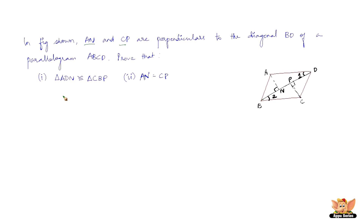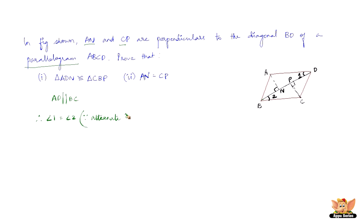Since ABCD is a parallelogram, we can say that AD is parallel to BC. Now AD is parallel to BC and transversal BD intersects them at B and D. Therefore, angle 1 equals angle 2 because they are alternate interior angles.